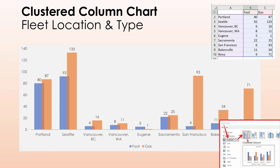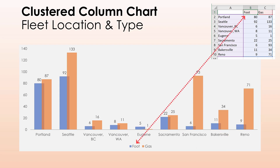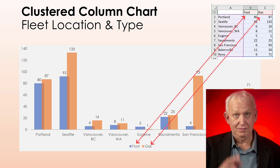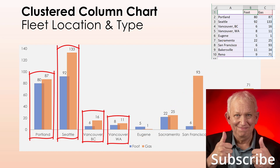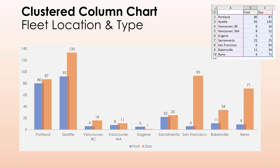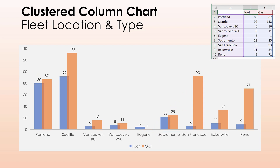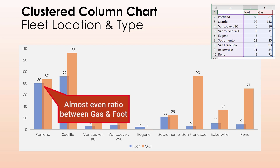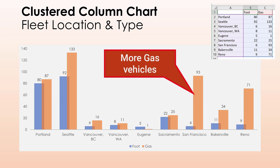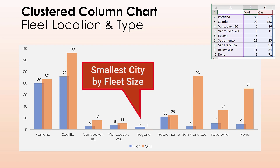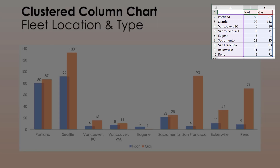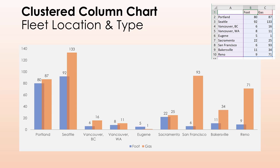The clustered column chart is another variation — the same column chart but now with additional data series. We now have columns grouped side-by-side. This chart joins two different classifications of transport vehicles: the first set of foot-powered delivery bikes and skateboards, and the second series of gas trucks and vans. For Portland, we see 80 foot-powered delivery vehicles and 87 gas-fueled vans. We can visually compare by city the ratio between fuel types. The instant takeaway is how San Francisco has way more gas-powered vehicles to combat the city's hills, and how Eugene is our smallest fleet.